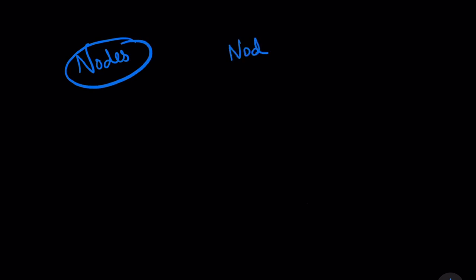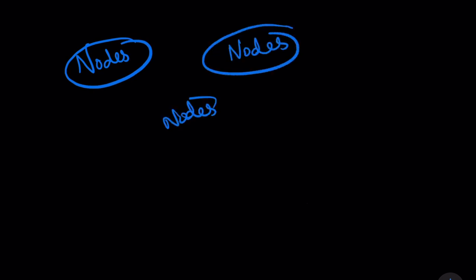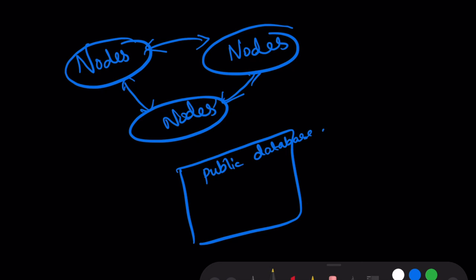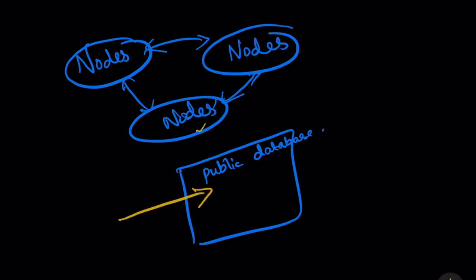Now let's talk about what the Ethereum network or blockchain is. Imagine there are independently running computers, also known as nodes. There is a public database that is shared among all these nodes, so whatever gets added to this public database must be agreed upon by all the nodes. This public database is known as a blockchain.